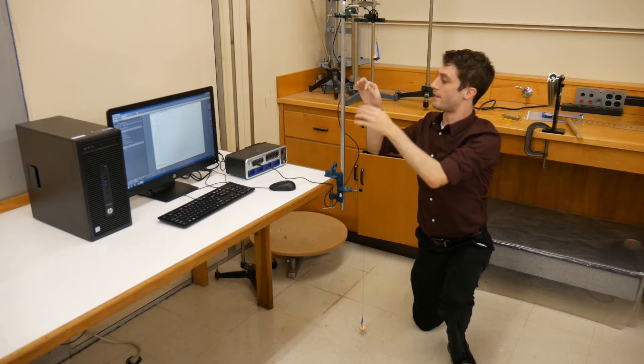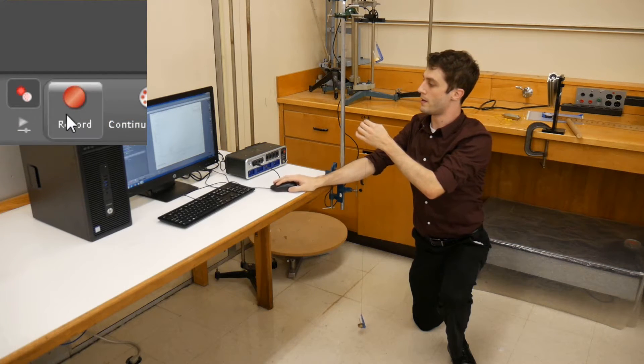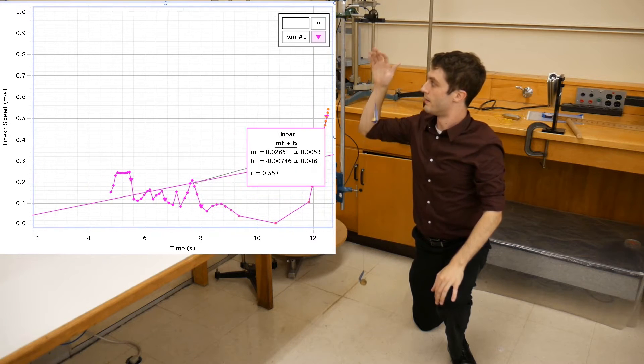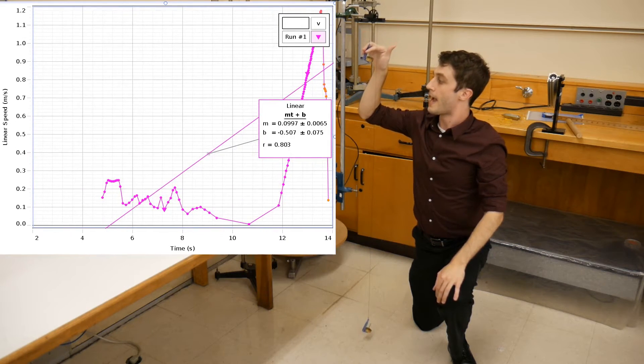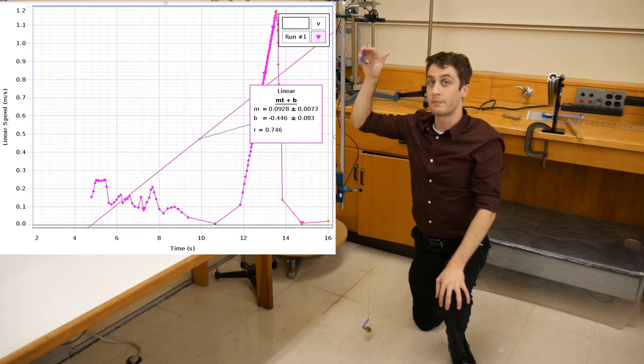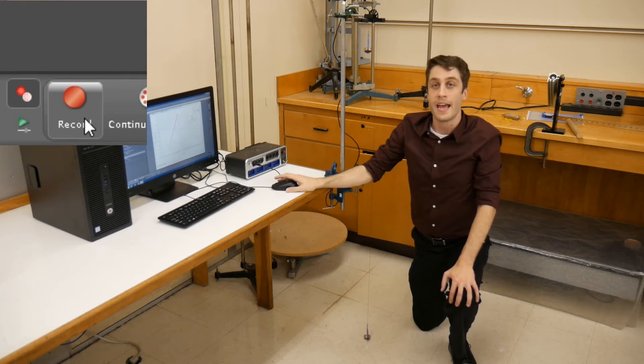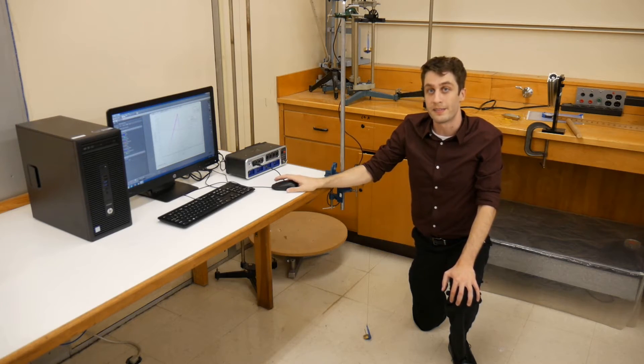Once you're satisfied that everything is set up correctly, click Record, release the string, and then catch the mass just before it hits the pulley. You can then click Stop, and this completes the first trial of your experiment.